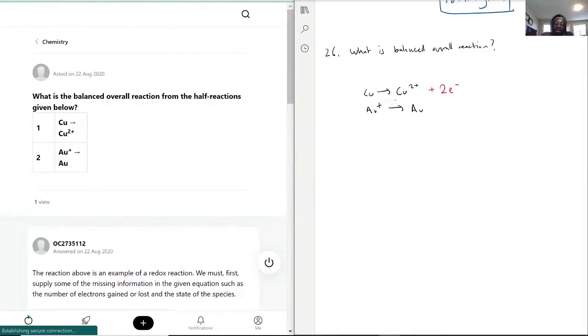Silver, on the other hand - okay, gold - goes from gold plus to gold, meaning that this actually gained an electron.